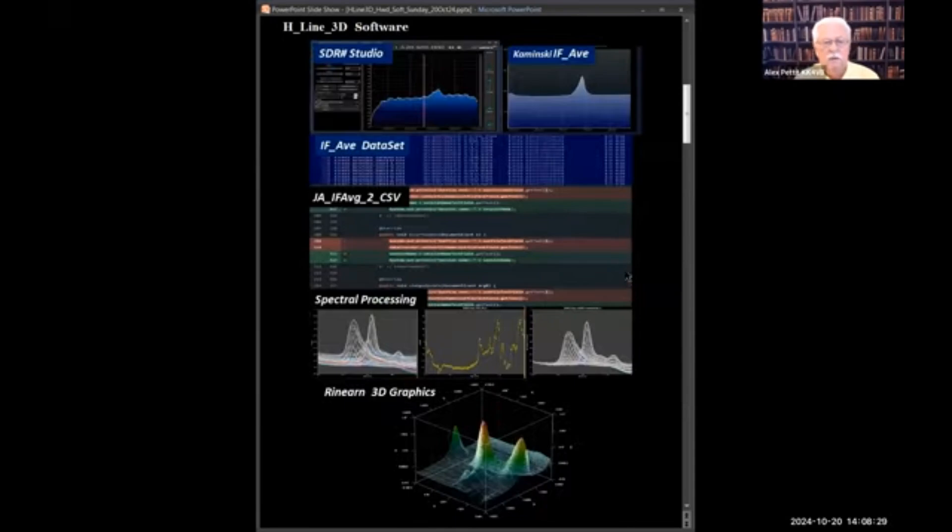The software is a derivative of some that has been used for a long time. SDR Sharp with Daniel Kaminsky's IF Average has been around for a while. His software can be set up to automatically record a data sim text file with columns of frequency and amplitude. Jameson has written software to pull in a whole subdirectory of these files and process them as a group.